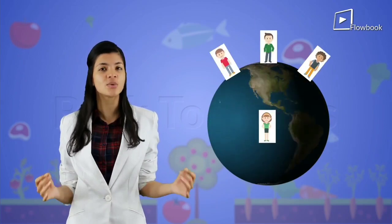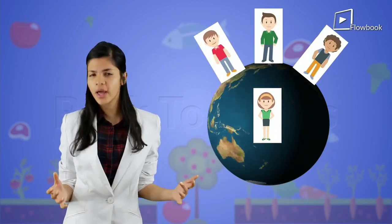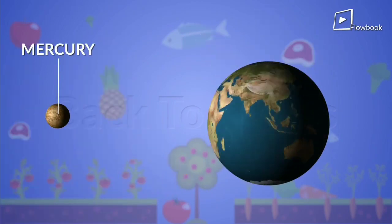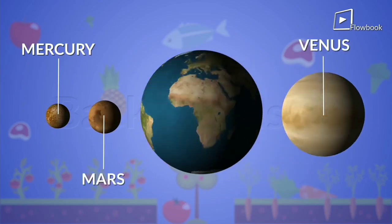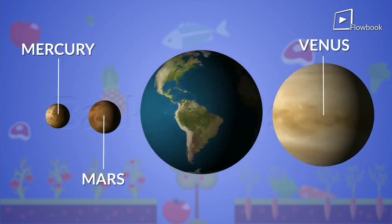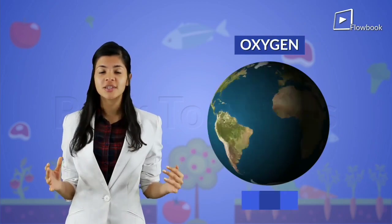Why do you think planet Earth is so well suited for us? Why can't we just live on Mercury or Mars or Venus? That's because Earth has two very important components for our survival: oxygen and water.